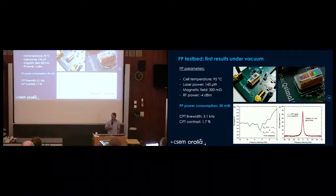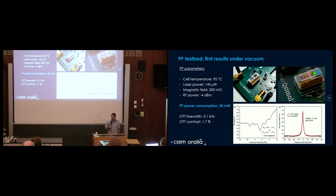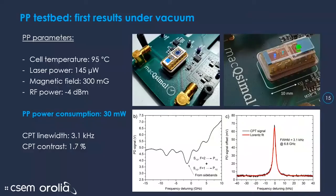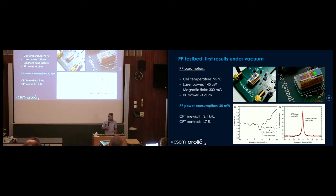These are the first results we got. It worked from the first part that we assembled. We put that on the vacuum chamber, control electronics, and everything was working right from the beginning. The parameters for this clock are a temperature of the cell of 95 degrees C, a laser power of 140 microwatts at the output of the laser. We have a magnetic field which is about 300 milligauss, and the RF power of minus 4 dBm. The overall power consumption of the physics package is only 30 milliwatts in vacuum. This is a target we had at the beginning of the project, between 30 and 40 milliwatts for the physics package only, knowing that the cell is heated at 95 degrees C and the laser at about 70 degrees C.